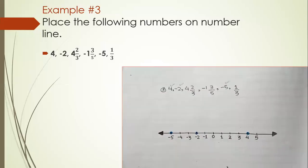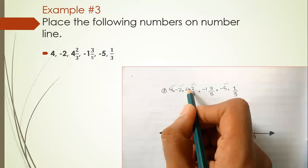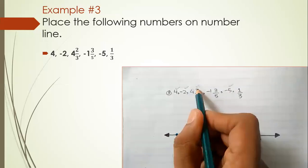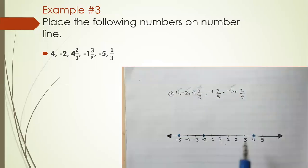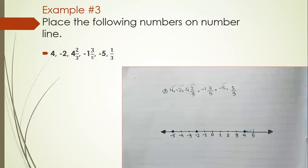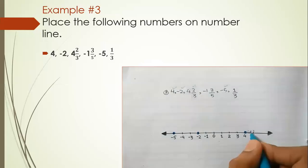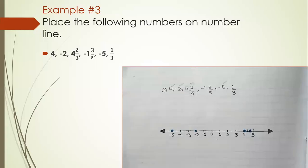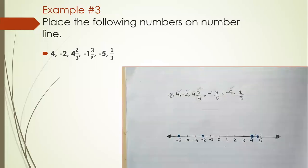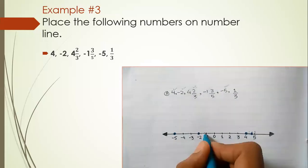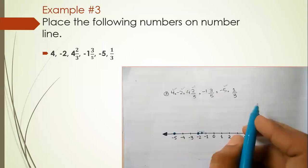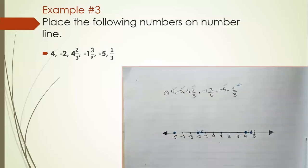Now the first fractional form: four and two-thirds. Four is here; denominator is three, so we break it into three equal parts — one, two, three — and mark on two. Next, minus one and three-fifths: minus one is here, we divide into five equal parts because the denominator is five, and we mark on three.